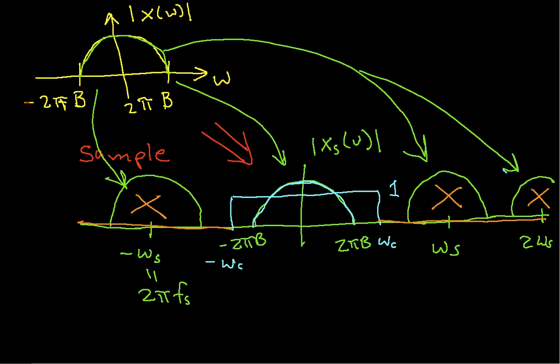But suppose that omega s is not large enough that this spectrum and this spectrum are separated. Suppose that omega s is small enough, so suppose that we had an omega s here, so that I get a copy of the spectrum that's centered here at this omega s, and then this would be 2 omega s, and so on.